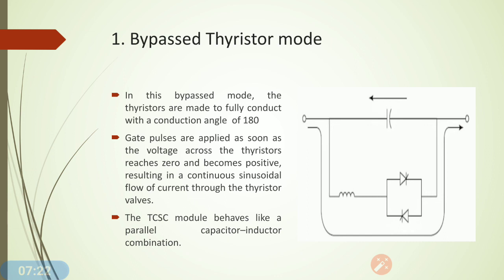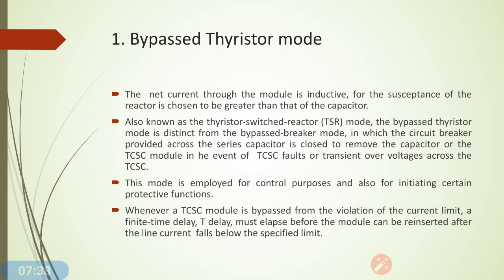This bypass mode behaves like a parallel capacitor-inductor combination. Because of full conduction of the thyristor, the inductor is available with its full capacity. The net current through the module is inductive, and the susceptibility of the reactor is chosen to be greater than that of the capacitor because the value of reactance is greater than that of the capacitor. This mode is also known as thyristor switch reactor mode, and it is used for control purposes and for initiating certain protective functions.